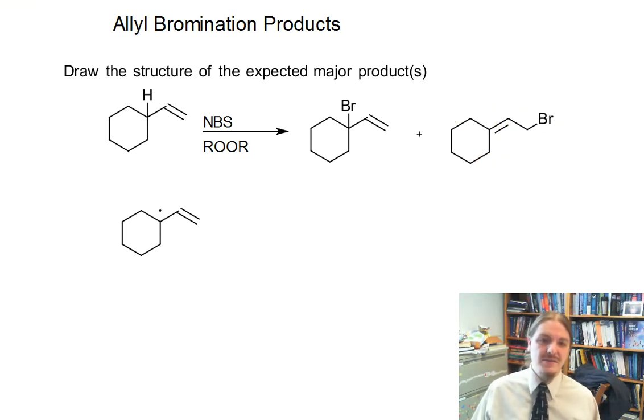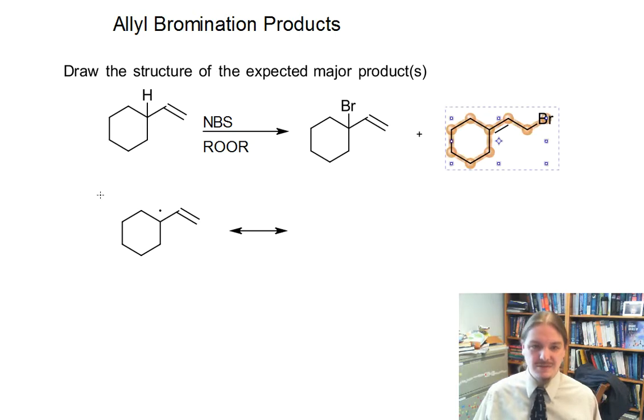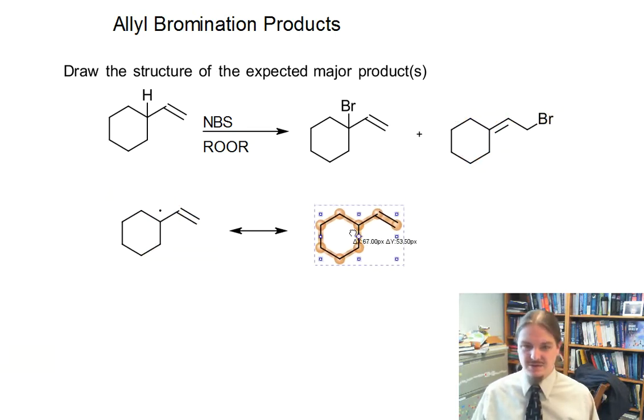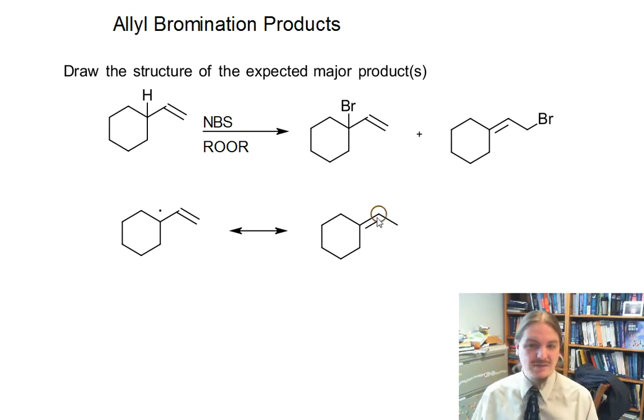And if this surprises you, let's talk about how we got here. We got here because the allyl radical has a resonance structure. You remember that the allyl radical had a resonance structure. You might be ahead of me a little bit, but here we go. The allyl radical has a resonance structure where the radical has moved to the other end of the chain and the pi bond has shifted inward.